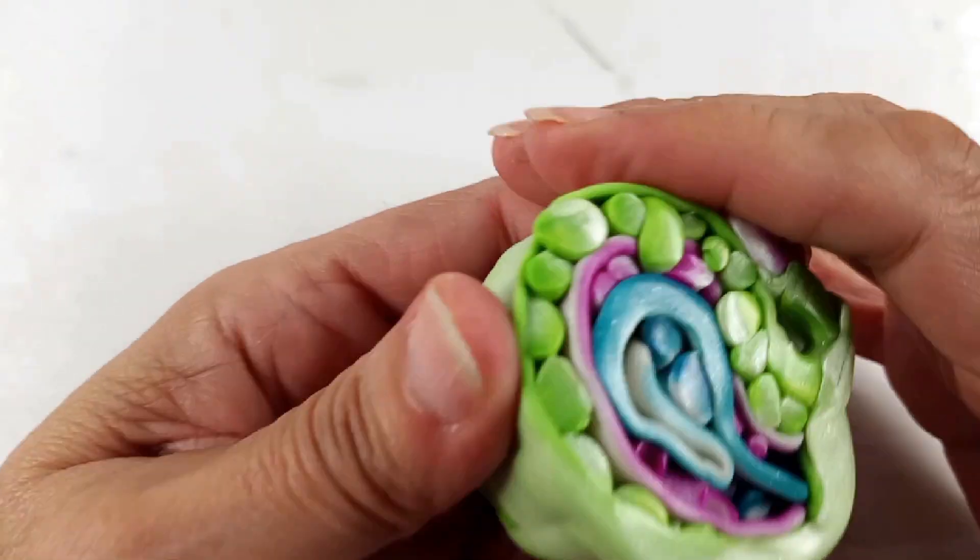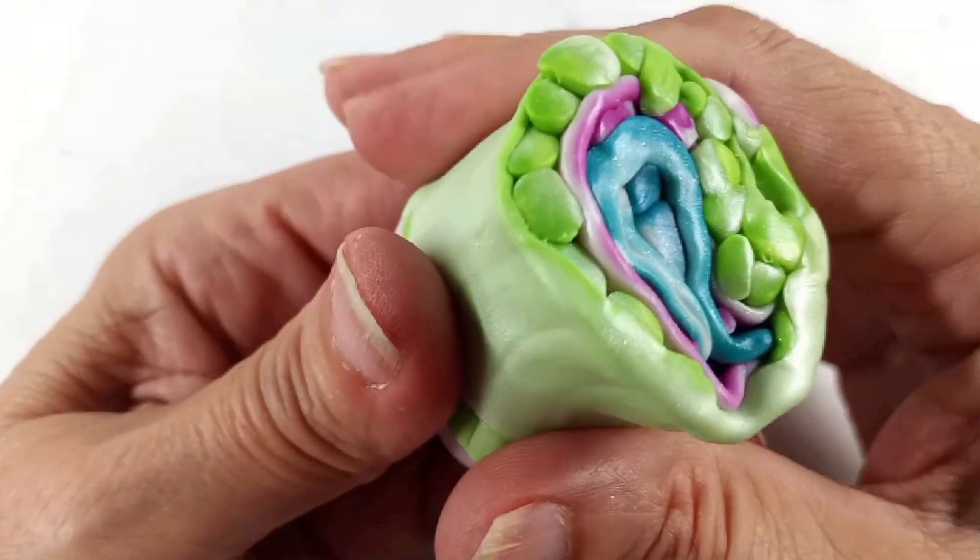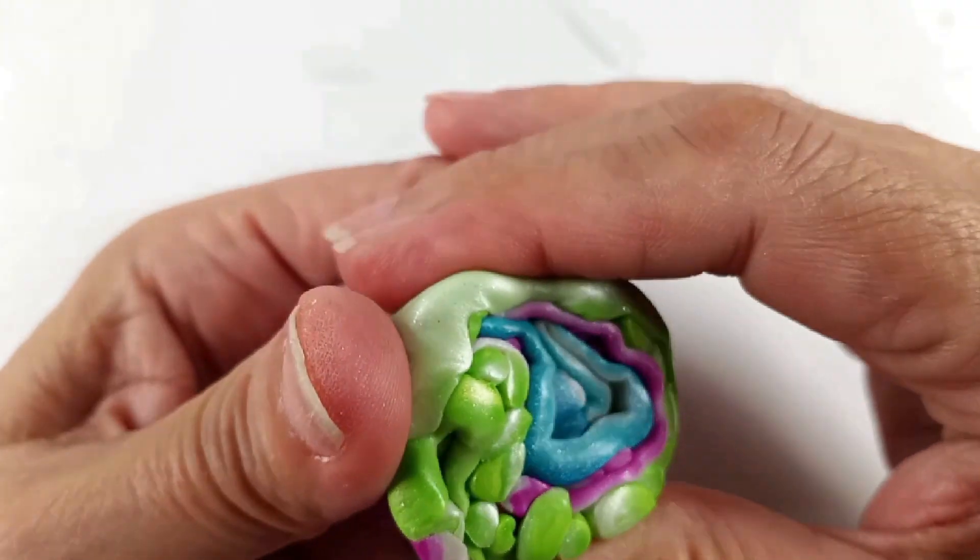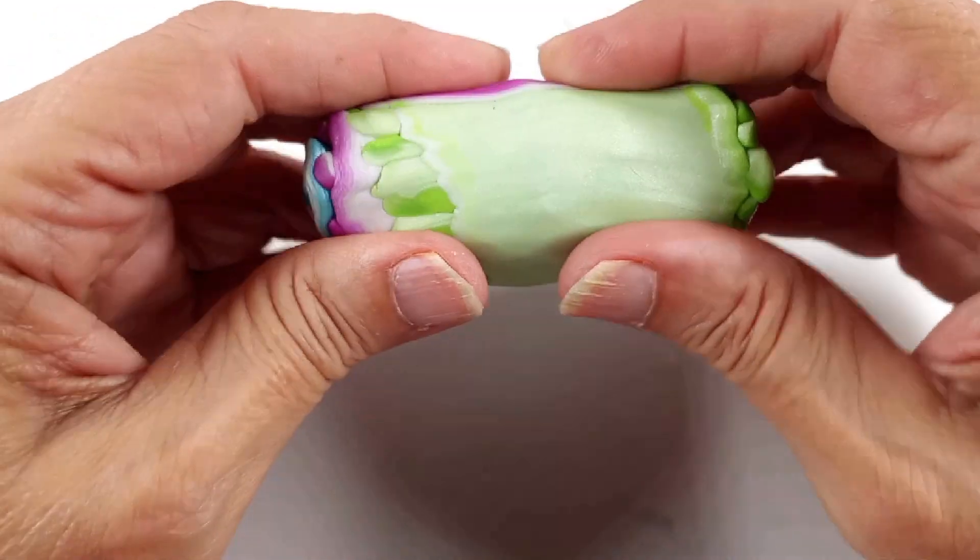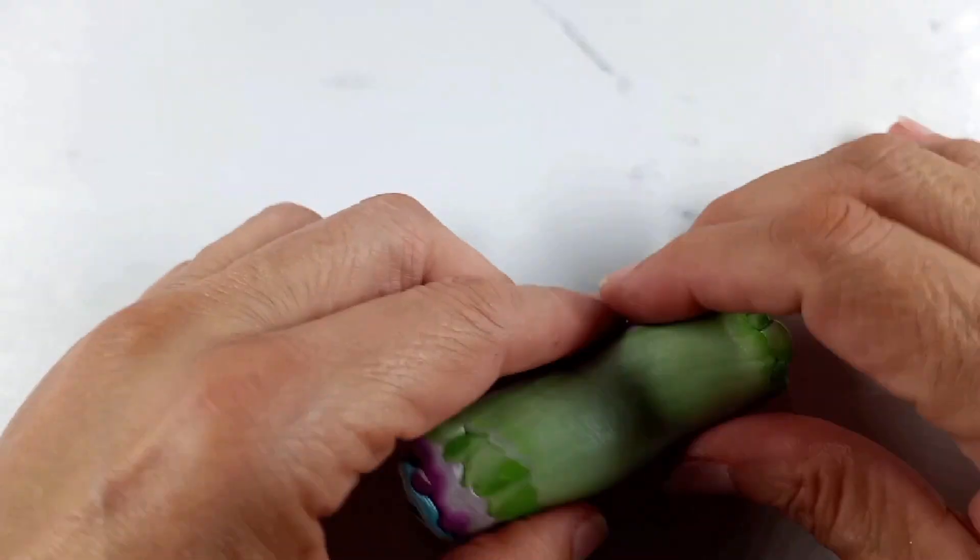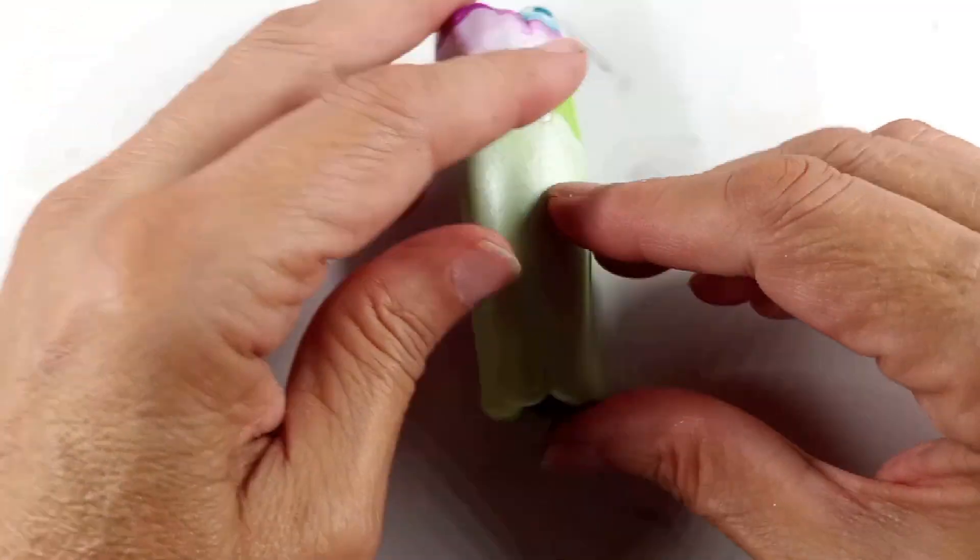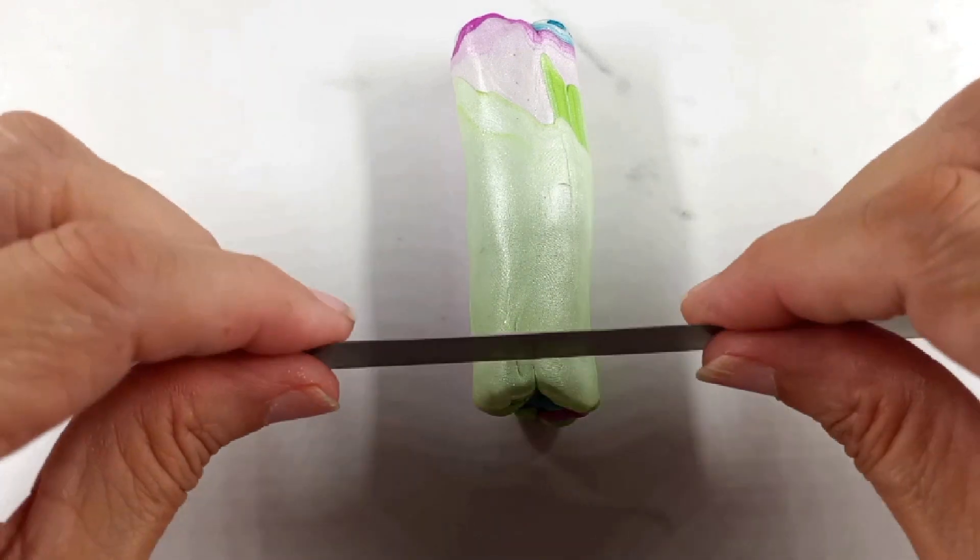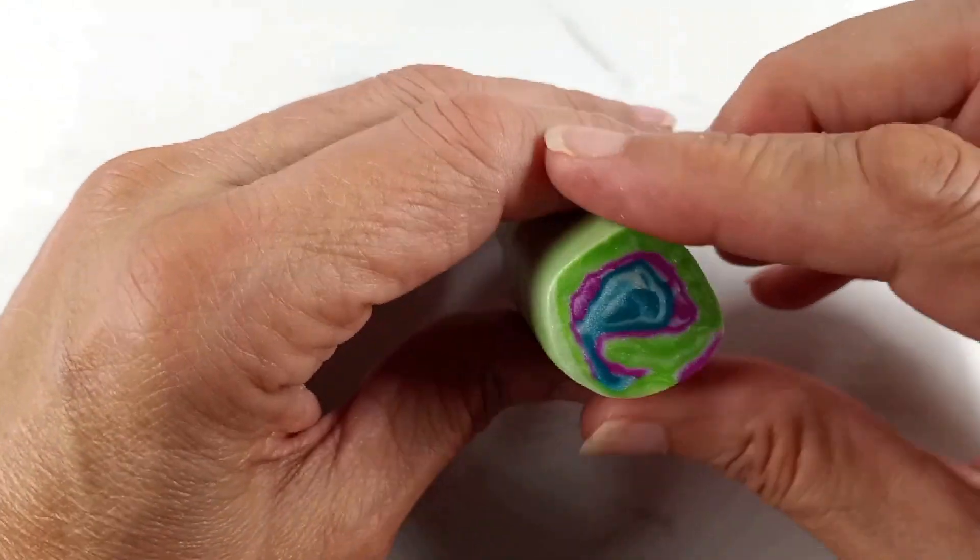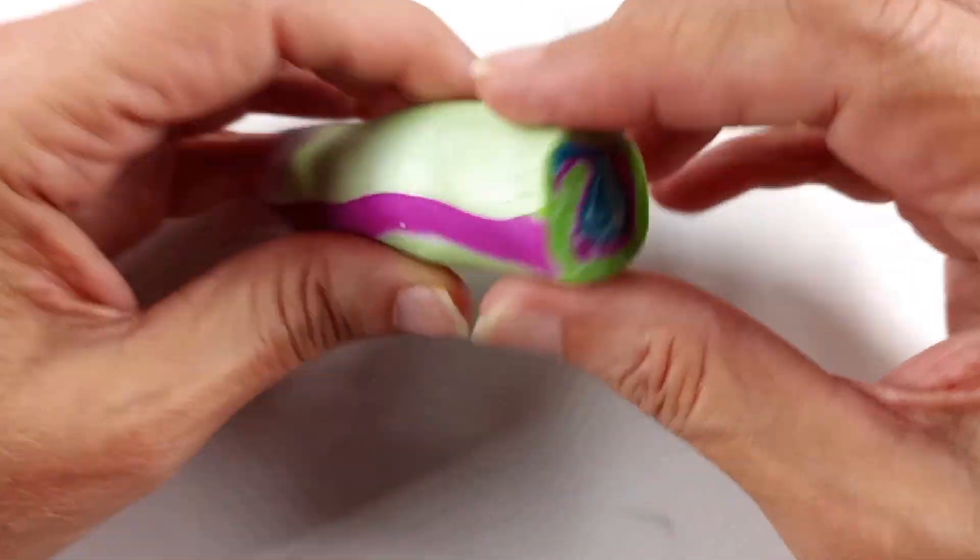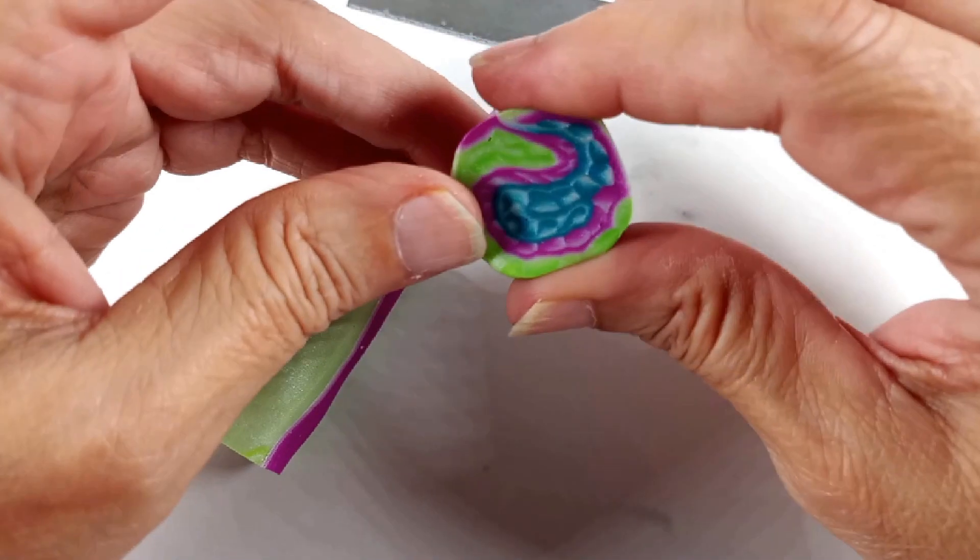So let's reduce this a little bit and see what we got. Trying to get the air out at the same time. Okay, let's see what we got here. Well, not quite what I expected. But still, what if we cut this over in this side. And that looks a little better, looks like a paisley.